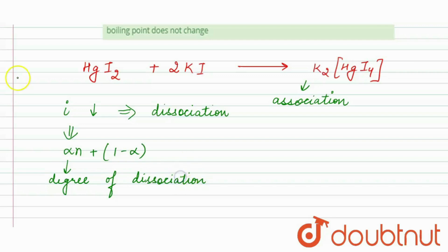But in this reaction, there is the association because here mercuric iodide and potassium iodide forms a complex. So, here the i factor decreases.